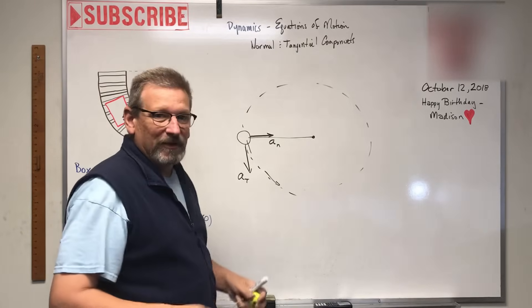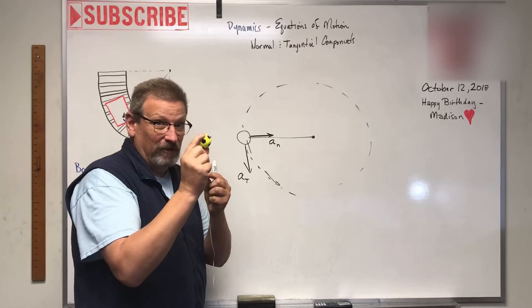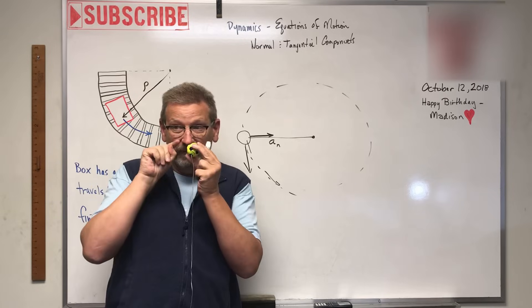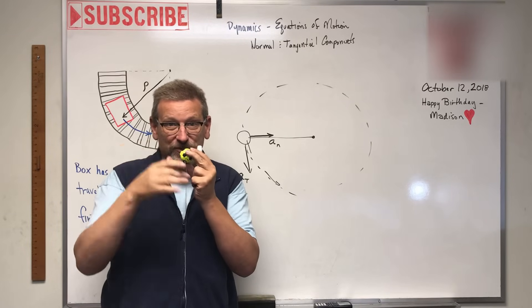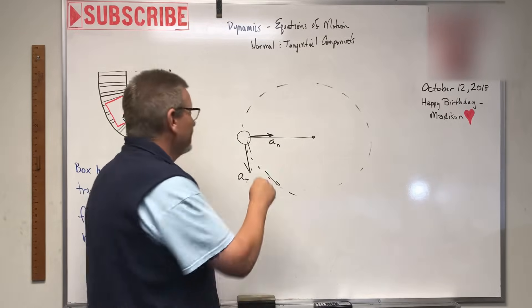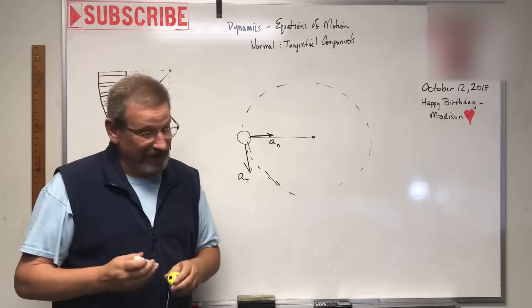Think about if you were the ball swinging around - what would you feel? You would feel that acceleration or force pulling you towards the middle of the circle. That tension in the string, that's due to that centripetal acceleration a_n, and that's why it goes towards the middle.